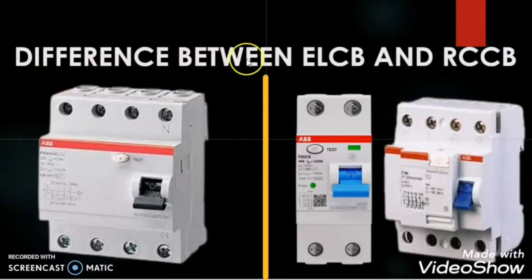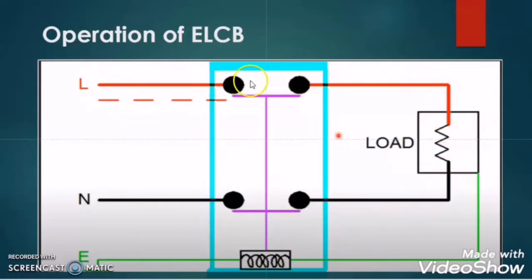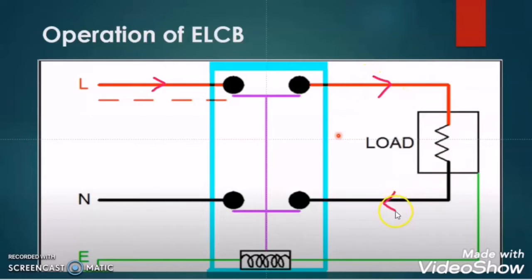In order to understand the difference between ELCB and RCCB, let us first understand the operation of each at the earth leakage fault condition. During normal operation, the power supply is connected through the ELCB to the load. The current flows through the ELCB, through the load, and returns back to the neutral.